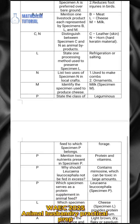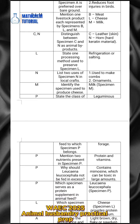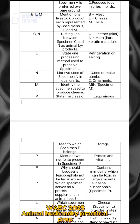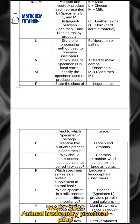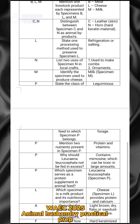For specimen N, list two uses in local crafts. Number one: used to make combs. Number two: used to make ornaments. For specimen N, you are also asked to identify the specimen used to produce cheese, and the answer is milk, which is specimen M.